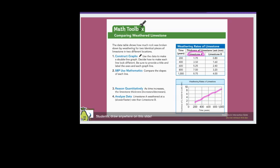Now, let's use a different color for limestone B. So in 200 years, it's 0.8. And in 400 years, it's 1.6. 600 years, it's 2.4. 800 years, it's 3.2. And in 1,000 years, it's 4. Now I'll just connect these dots.